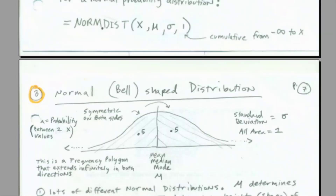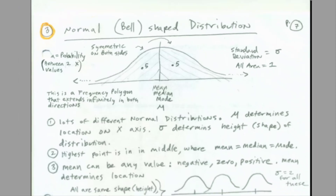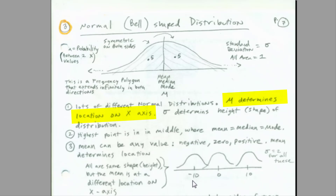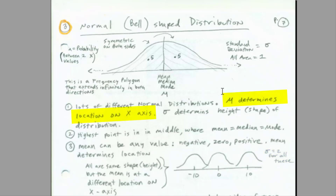Let's talk about some important points. There are lots of different normal distributions. Mu determines the location on the x-axis — we'll look at an example of the Bell-shaped curve sliding up and down. You could have mu equal to minus 10, 0, or 10. They're all supposed to be exactly the same distribution shape — standard deviation 2. So mu determines the location, and standard deviation determines the height or the shape.